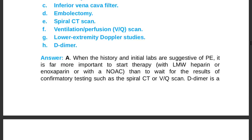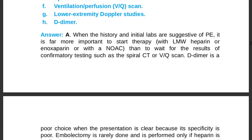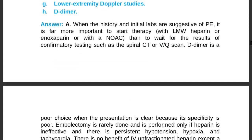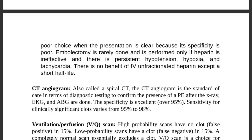D-dimer is a poor choice when the presentation is clear because its specificity is poor. Embolectomy is performed only if heparin is ineffective, with persistent hypotension, persistent hypoxia, or tachycardia. IV unfractionated heparin has no benefit except a short half-life. Always use low molecular weight heparin.